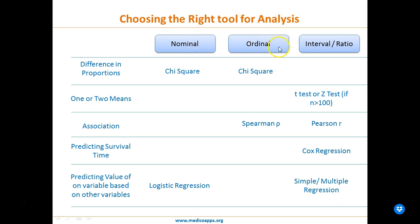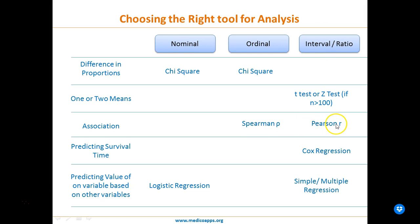To summarize the tool selection guide: for nominal and ordinal data, chi-square is the analytical tool of choice; for predicting variables, logistic regression is used for nominal or ordinal data. For interval and ratio data, t-test or z-test is used — z-test when sample size is more than 100. For association, Spearman coefficient is for ordinal/nominal data and Pearson coefficient for interval/ratio data. For predicting survival time, Cox regression is the method of choice. For predicting variable values, simple or multiple regression is used.